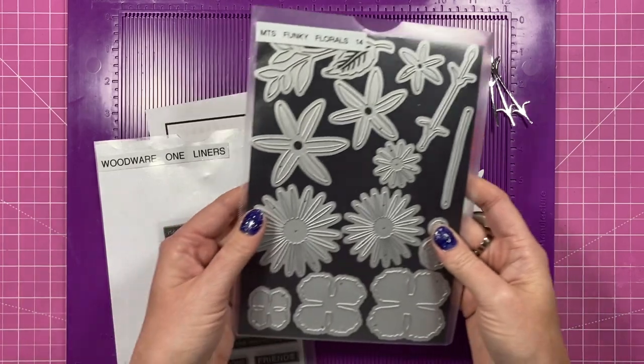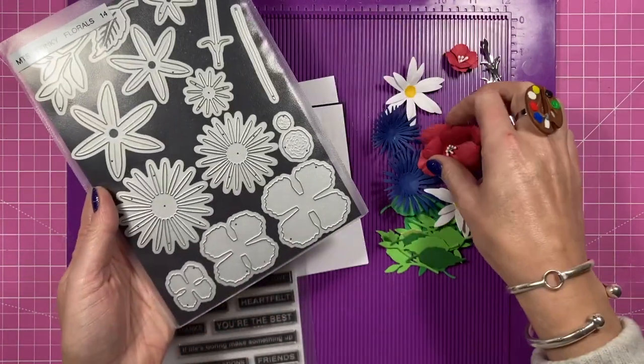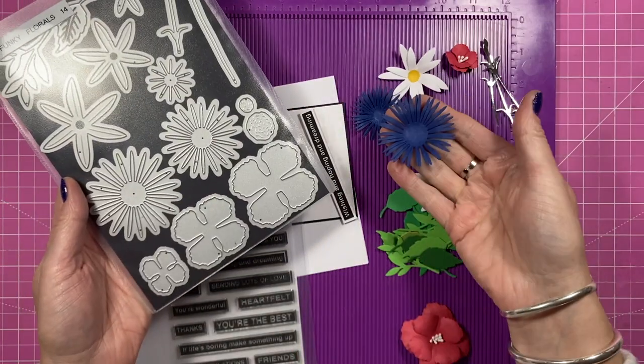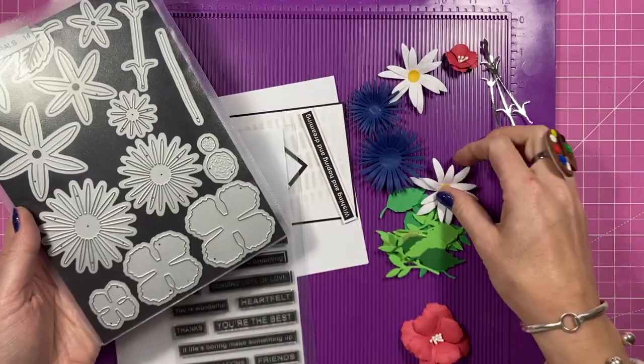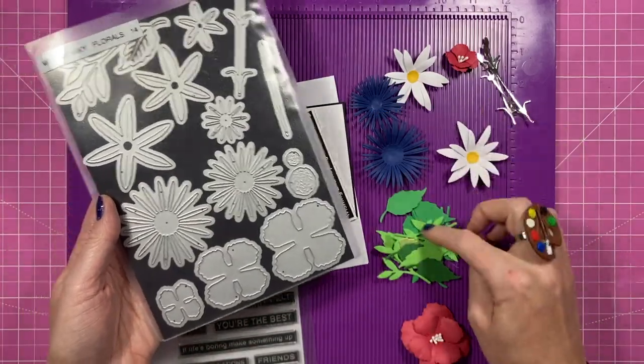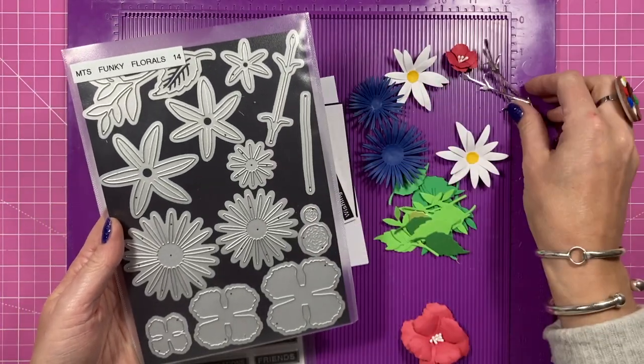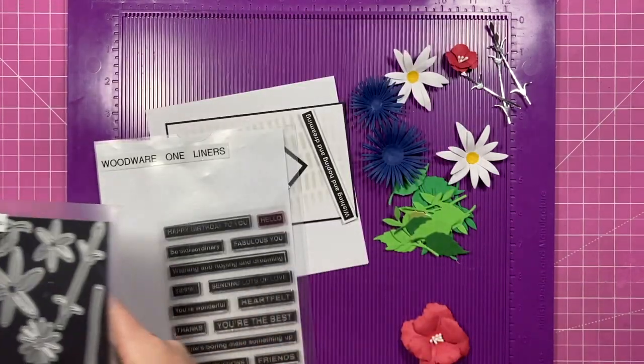So for the flowers I've used my funky florals. You get 14 dies in this set so you get your three here which will make this kind of flower, then you get these three here which will make ones like this. You've got the centers and stuff as well and then you've got these three here which will give you a flower like this. You've also got the leaves which I've already cut and then you've got your sprigs here as well and I've done those ones with a mirrored silver cardstock. So all of that's been cut already.